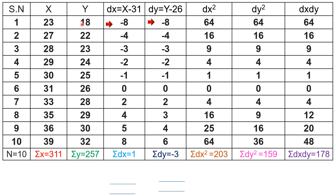For the dy values, subtract the assumed mean of y (26): 18 minus 26 = minus 8, 22 minus 26 = minus 4, 23 minus 26 = minus 3, 24 minus 26 = minus 2, 25 minus 26 = minus 1, 26 minus 26 = 0, 28 minus 26 = 2, 29 minus 26 = 3, 30 minus 26 = 4, 32 minus 26 = 6.